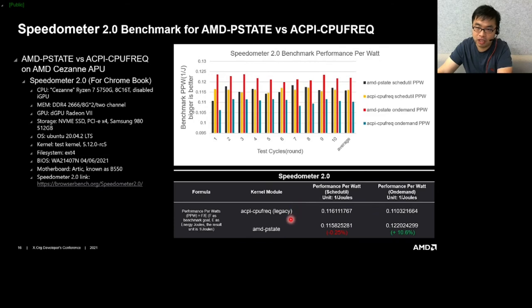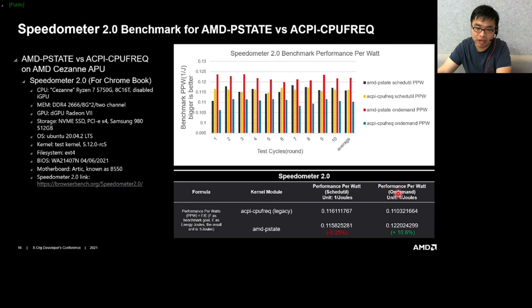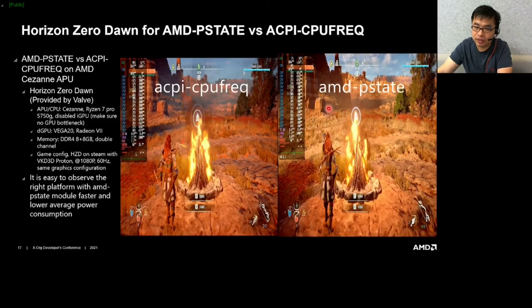For the Speedometer JavaScript benchmark, the schedutil result is almost the same, and about one-fourth of a percent should be within the measurement error range. The average data shows AMD P-state got 10% improvement with the on-demand governor. For the Horizon Zero Dawn game, under the same performance level — look at the pictures — you can see the AMD P-state clocks are much lower than the ACPI-based CPU clocks, meaning we can save more CPU power consumption.